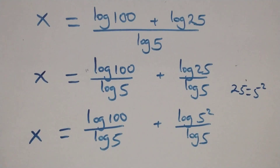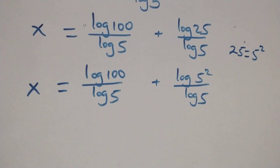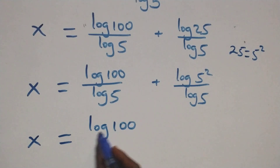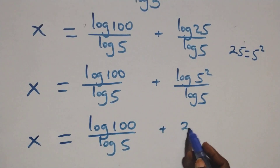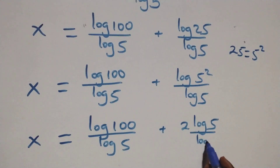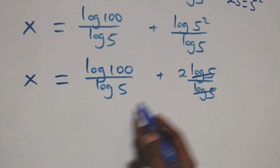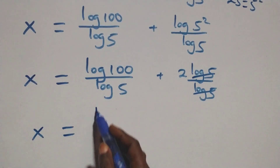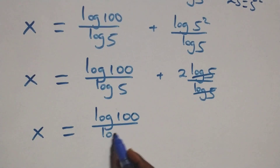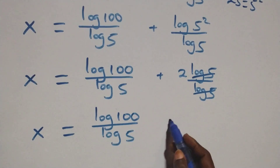We apply the power rule of logarithm, and 2 comes out in front. All we have becomes x equals log 100 over log 5 plus 2 log 5 over log 5. The log 5 terms cancel each other, leaving 2, which implies x equals log 100 over log 5 plus 2.